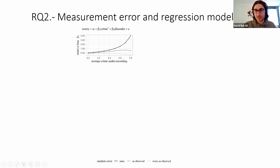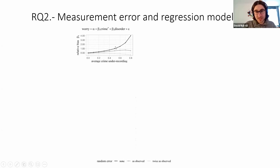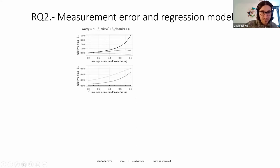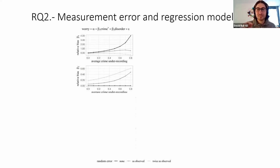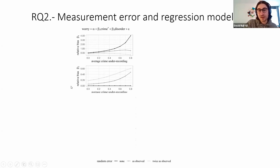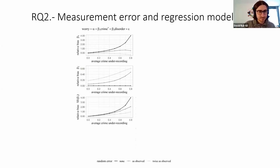We show the bias in the regression coefficient for the first independent variable. The black line represents random error as observed in the data; gray represents as observed in a real case based on crime survey data; and light gray represents twice as observed. The bias in regression coefficients becomes larger, and in all cases is very large, but becomes larger when there is more differential error between areas. This also affects not only the coefficient of the first variable but all regression coefficients in the model — so when one variable is affected by measurement error, our whole model may be wrong. The bias becomes larger when the average level of under-recording becomes larger, and it also affects the standard error of the regression coefficients.